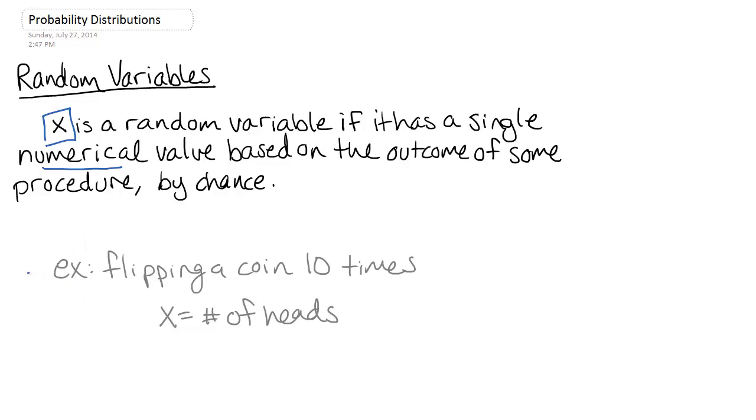So a simple example: if you're flipping a coin ten times, one possible random variable would be to have X be the number of heads. So our number of heads could be zero, one, two, three, all the way up until ten.